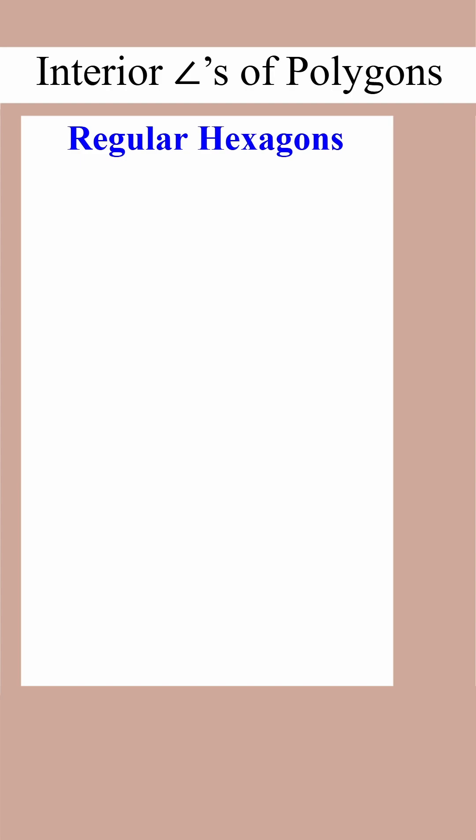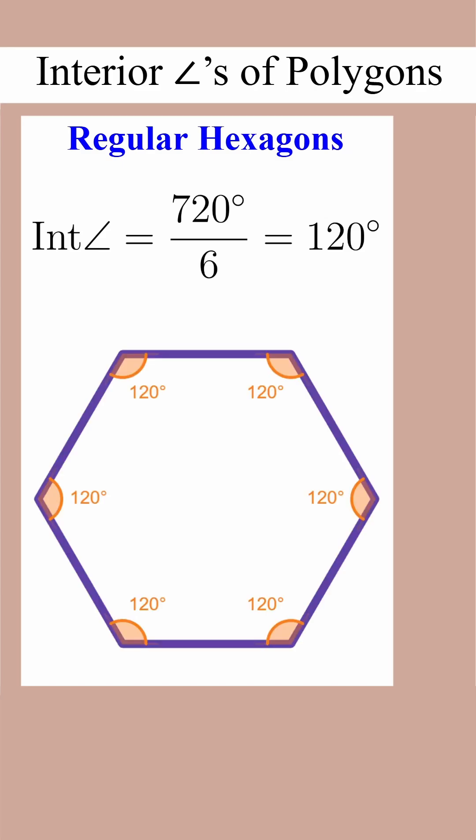Regular hexagons instead have 720 degrees and six angles, so we'll do 720 divided by 6 and get 120 degrees, which on a diagram will look something like this.